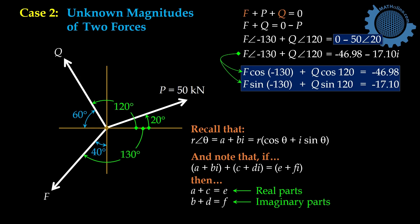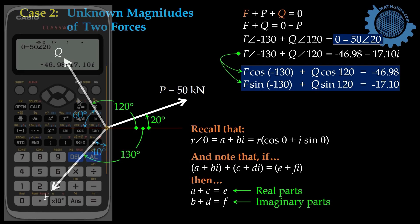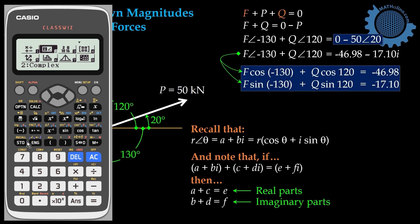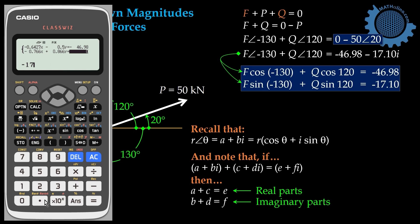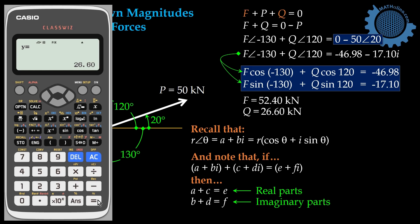We don't need to write these two equations separately. We can mentally explode the equation into two and solve them using the simultaneous equation mode. Go to menu, then simultaneous equation, select number of unknowns: two. Enter cosine(negative 130), cosine(120), negative 46.98. Then sine(negative 130), sine(120), negative 17.10. F is 52.4 kilonewton and Q is 26.6 kilonewton. These are the answers.